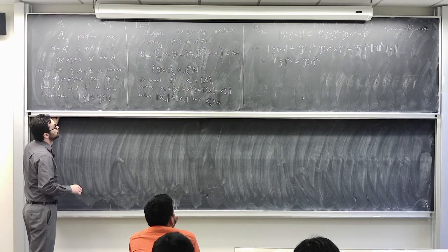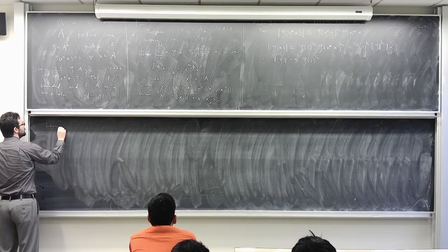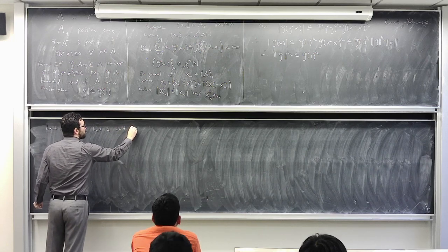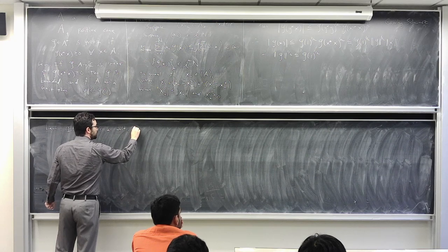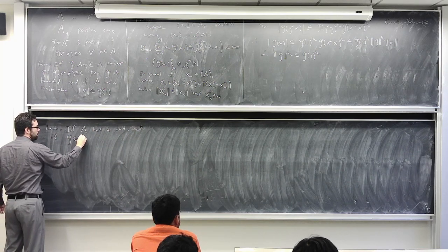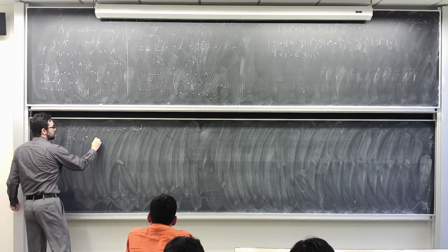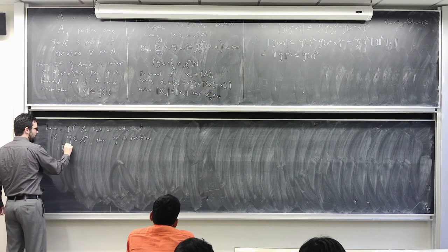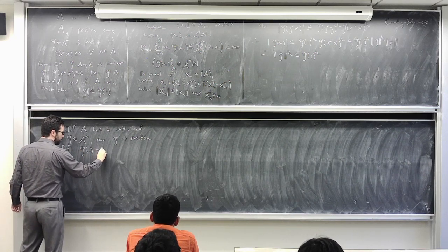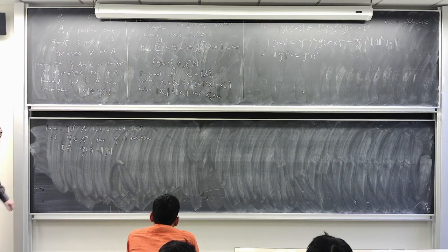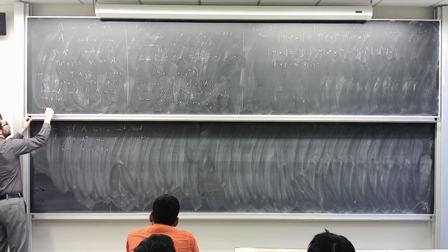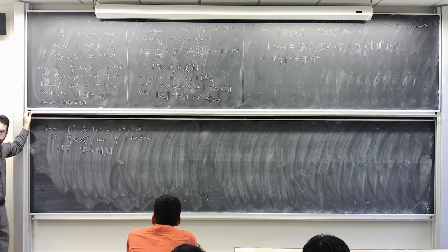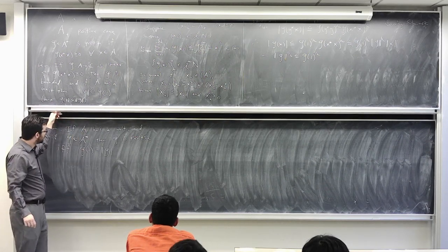Here's another general fact: if A has a unit and we have any bounded linear functional φ, then φ is positive if and only if φ(1) equals its norm. Of course φ(1) is always ≤ ‖φ‖, so this shows they are equal.